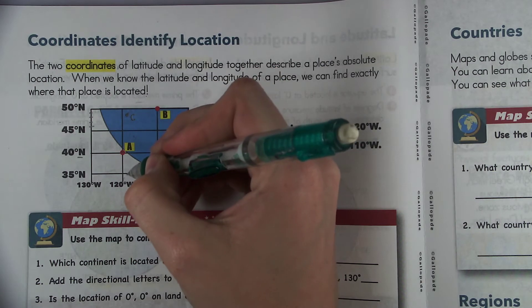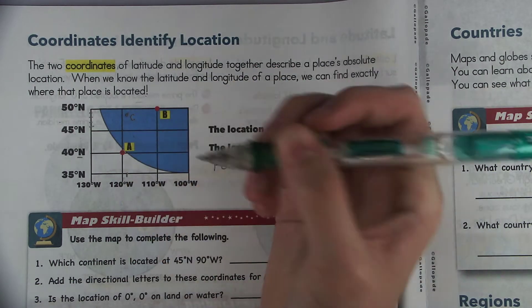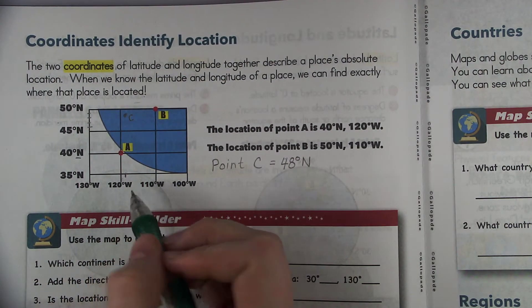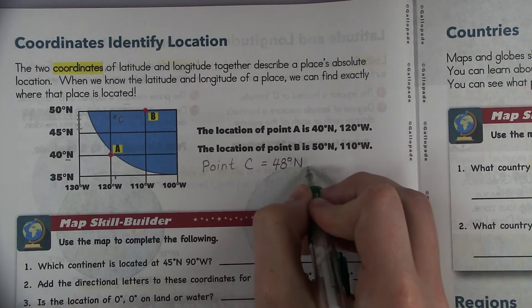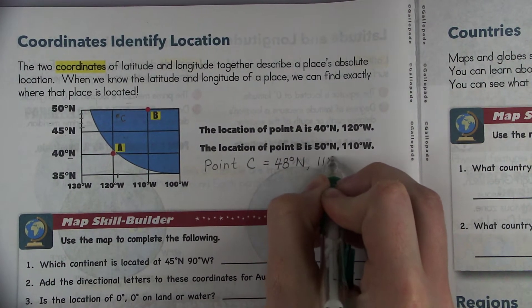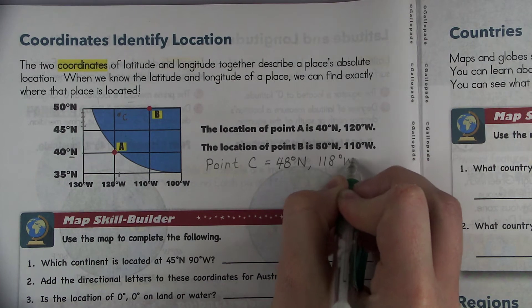So this one's really close to 120, it's about right there. So I would say a good estimate would be about 118 degrees west.